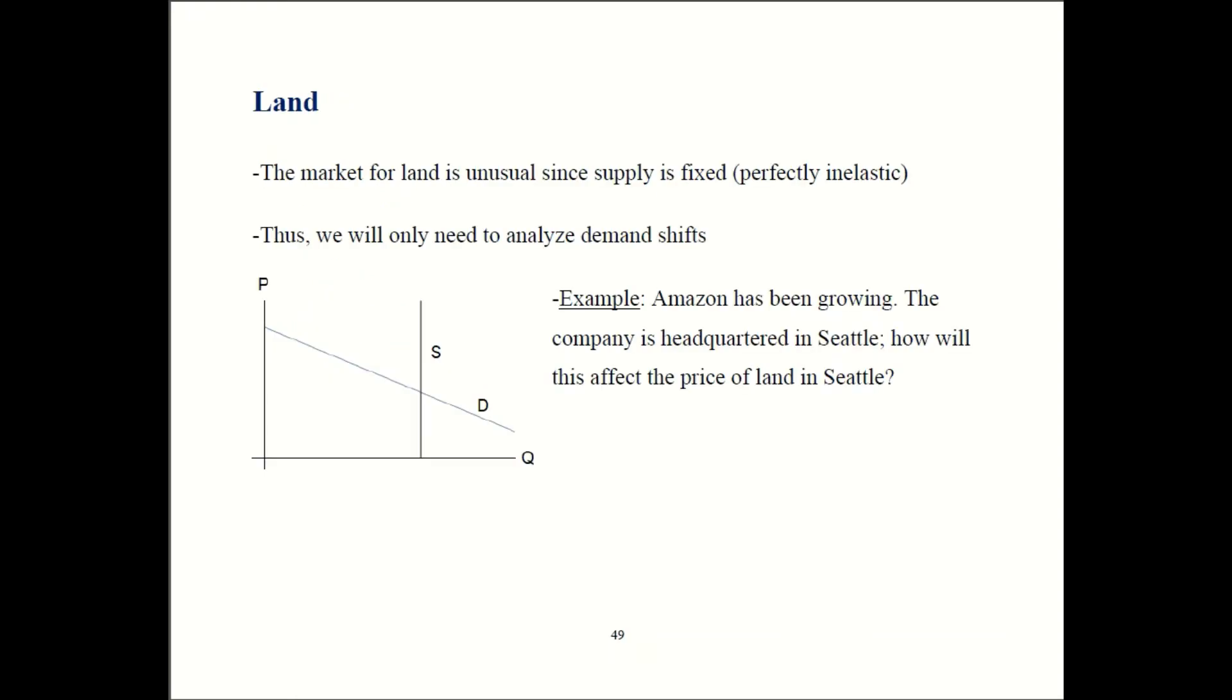What's weird about land is that the supply of land is typically fixed with a few exceptions. Your book talks about artificial islands being built in some places, but that is very much the exception rather than the rule. Most of the time, most of the planet, the amount of land available is going to be fixed. As a result, it's going to simplify our analysis a little bit. We only have to worry about demand shifts rather than supply and demand shifts.